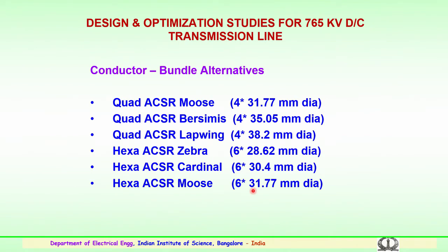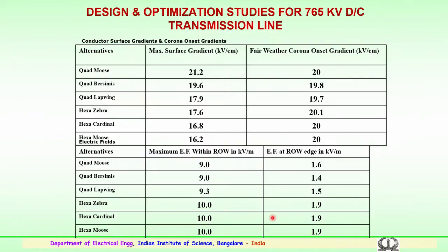Studies were conducted for the double circuit and a lot of data was available. Before actual construction of the tower and before actual stringing, this data helped in properly optimizing the various combinations.